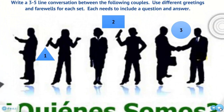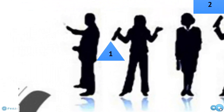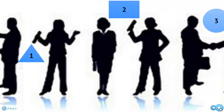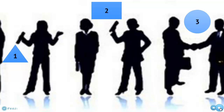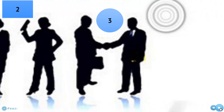Using what you've learned, I'd like you to write a three to five line conversation between the following couples, using different greetings and farewells for each set, with a question and an answer included. The first conversation is between a guy and a girl — you can name them whatever you'd like. The second is between two ladies, and the third is between two males. You can make them formal or informal, as creative as you want.